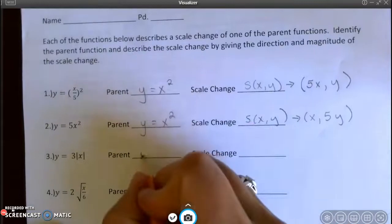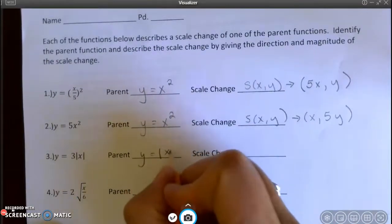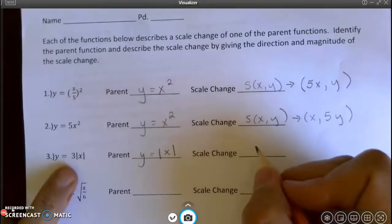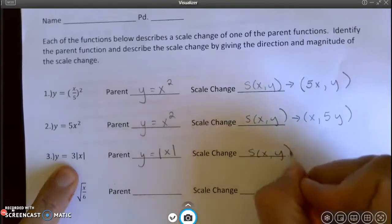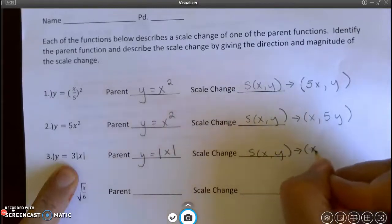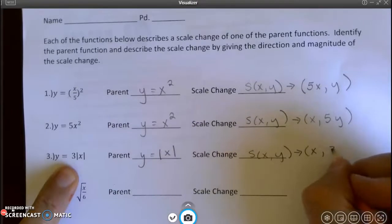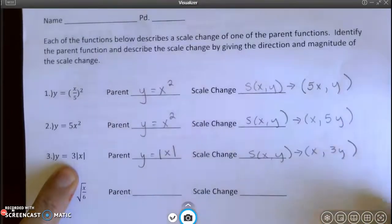Next one, I've got y equals the absolute value of x. Notice the 3 is outside of the grouping symbol with the x, so it does not affect the x. So nothing at all is happening to the x, but the y is getting multiplied by 3.